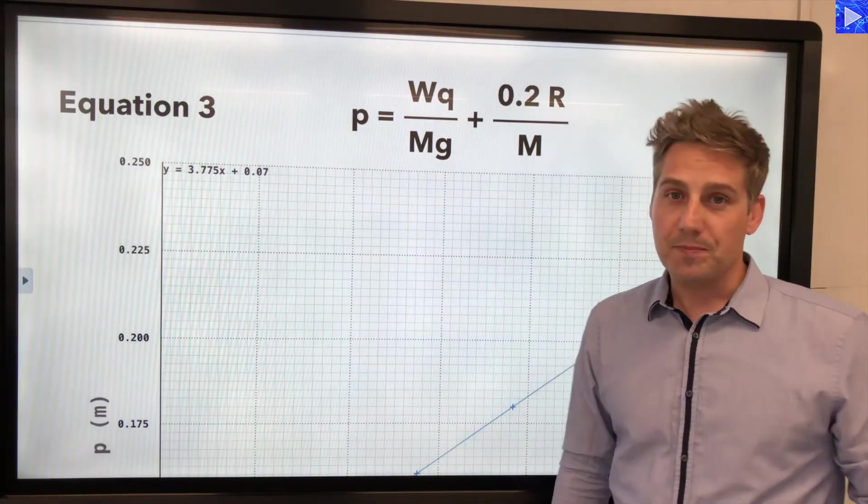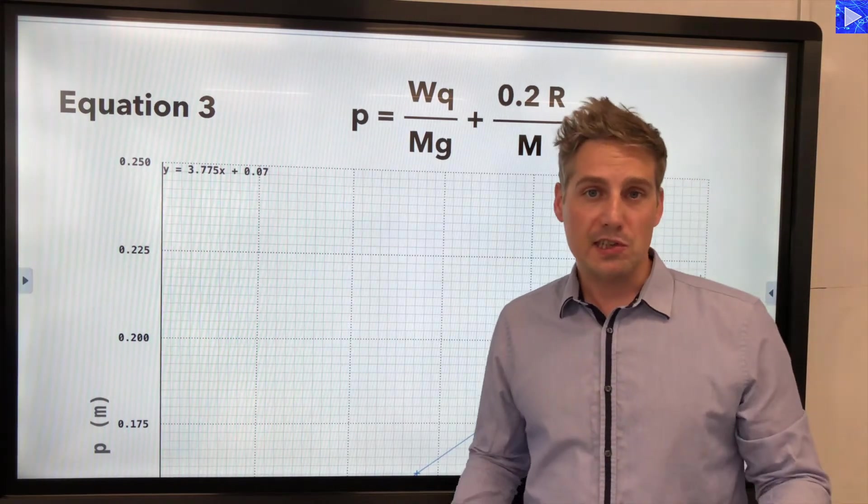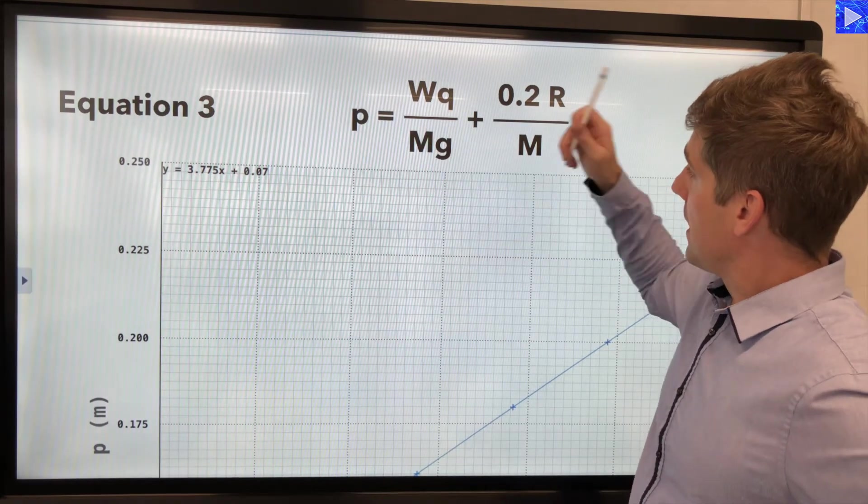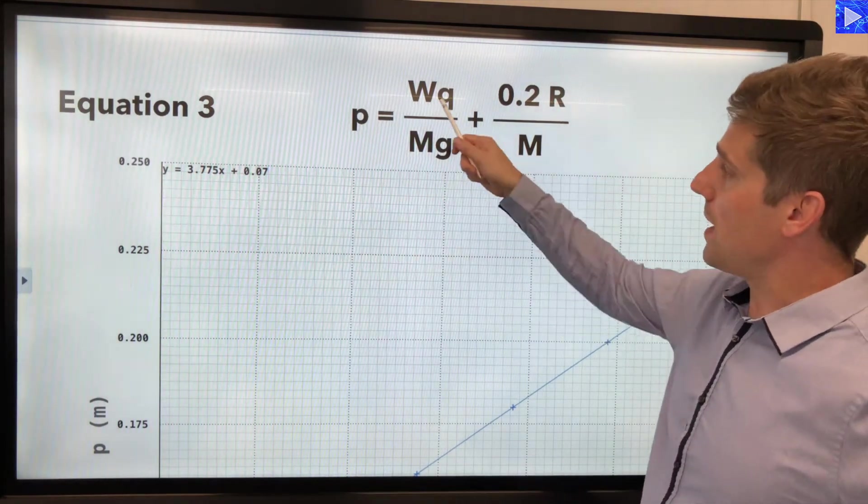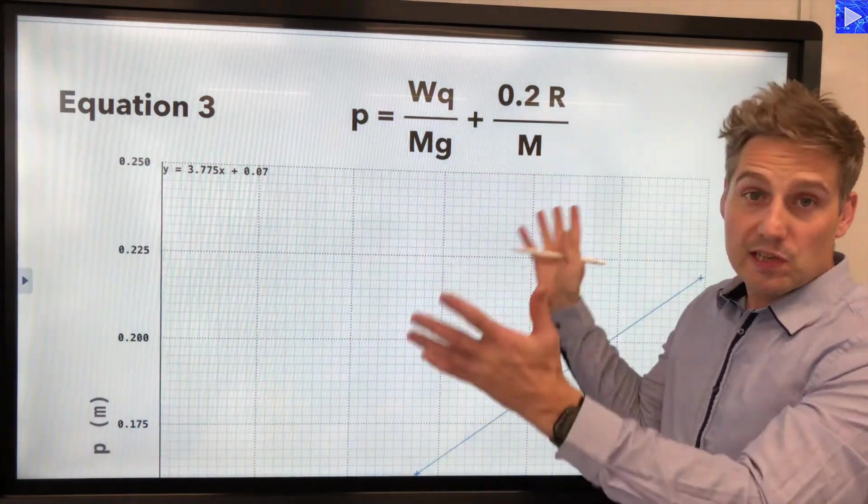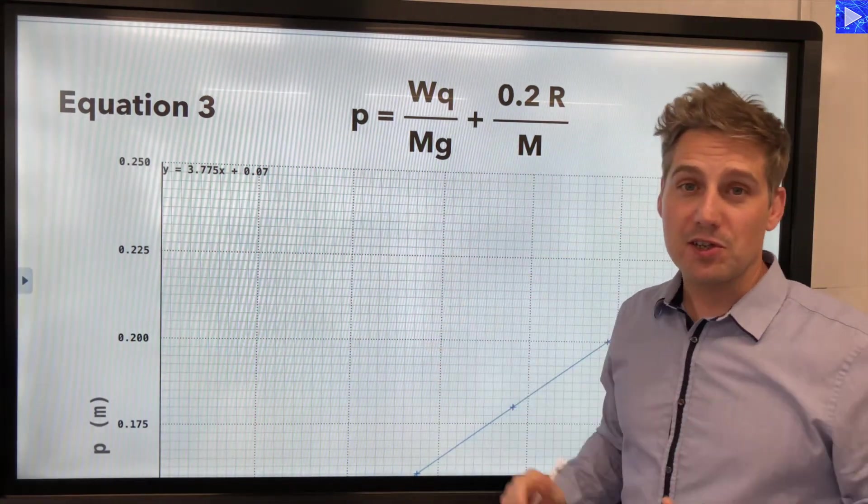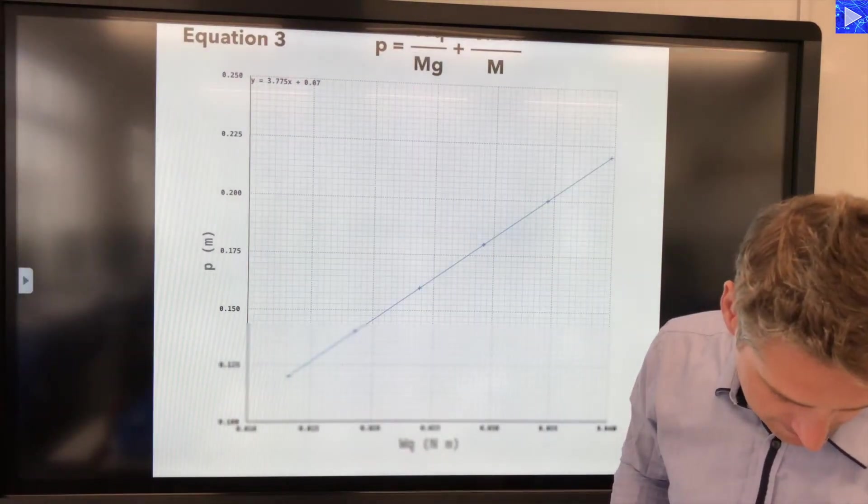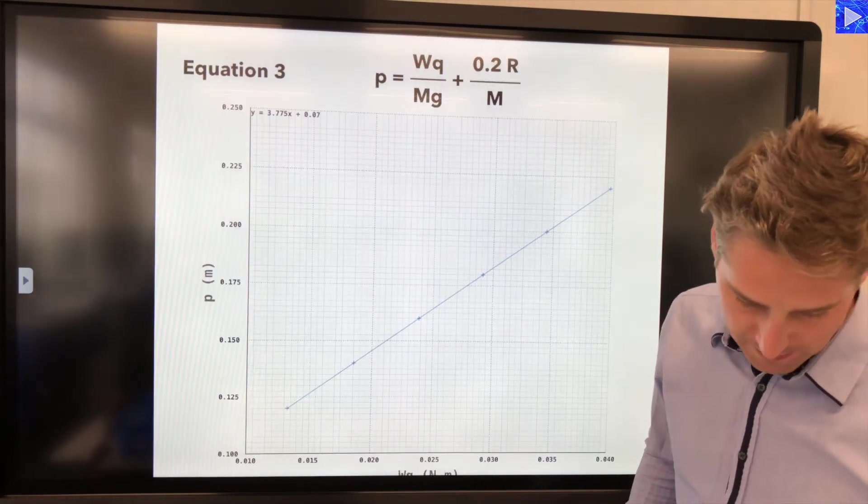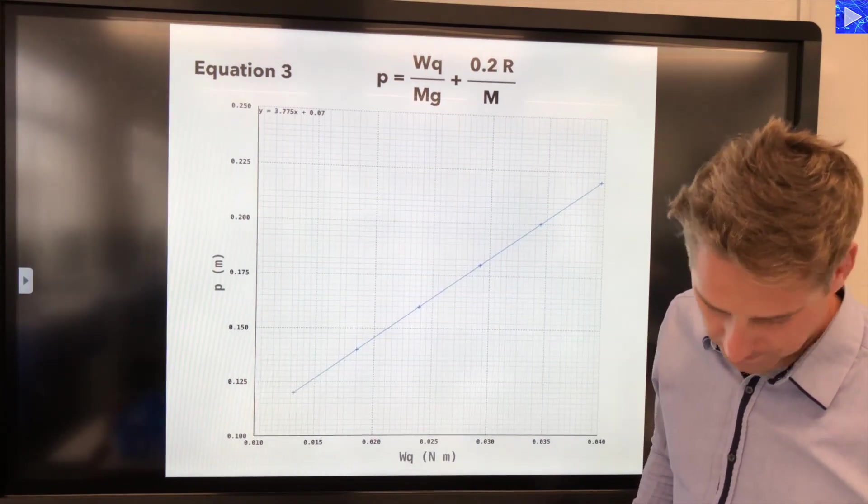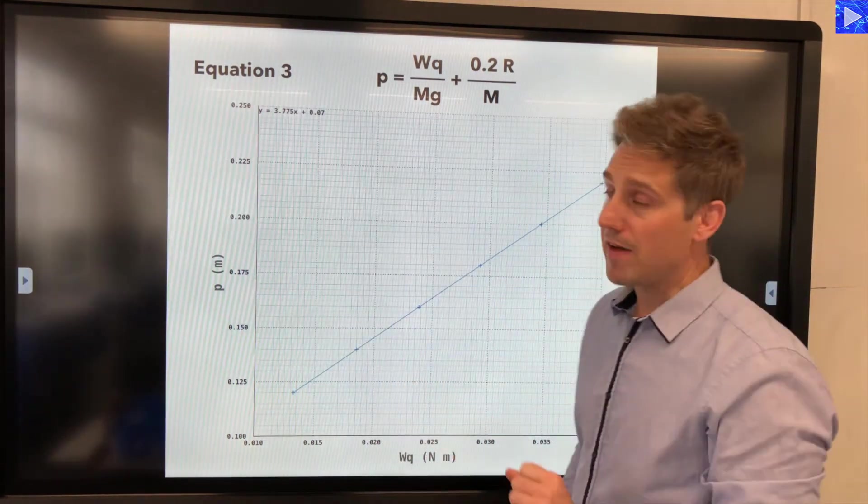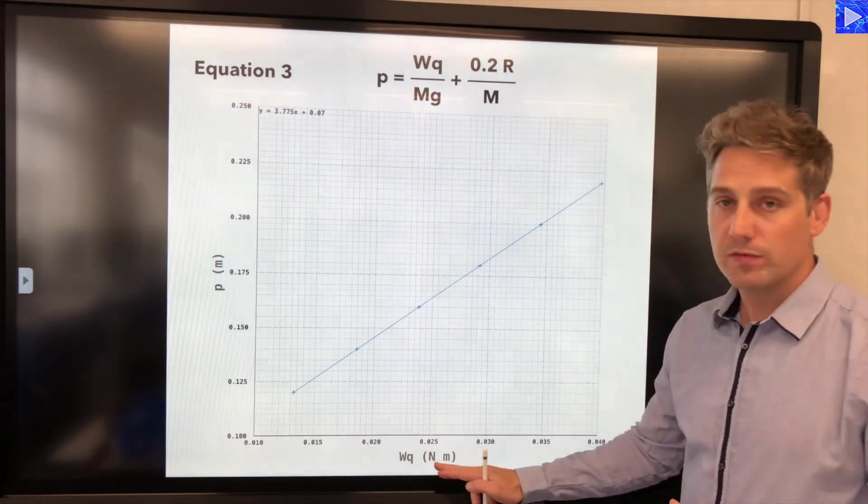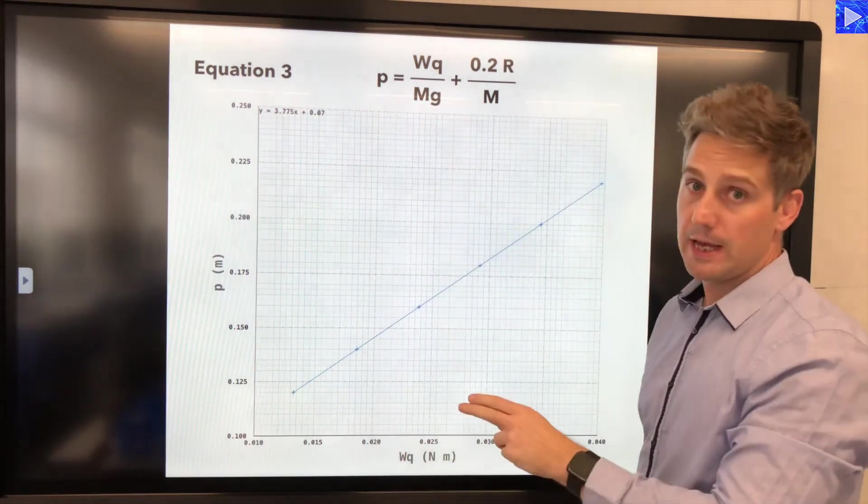Here we go equation three. This was about moments. It's an experiment to determine the value of m and the value of r in this equation so everything else would be known. So you can see there's quite a lot going on in that equation. It's a good example to work through. Let's have a look at the graph. I'll just keep that equation visible. Right so on the y-axis we have p. That's on the left there anyway. That's fine. And then we have wq on the x-axis.